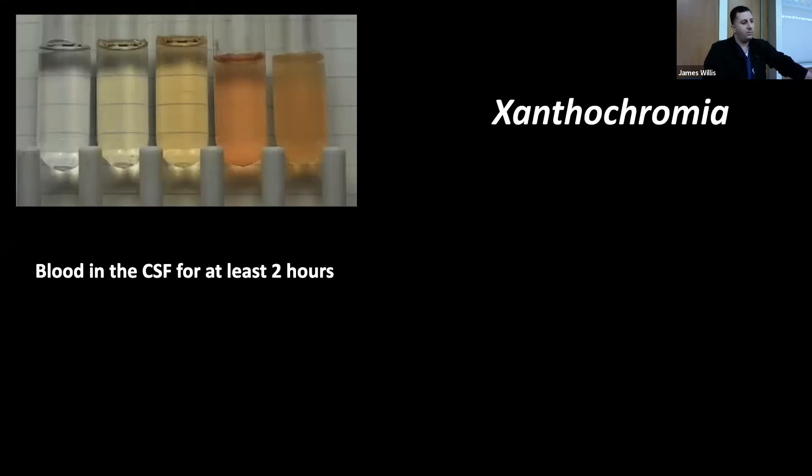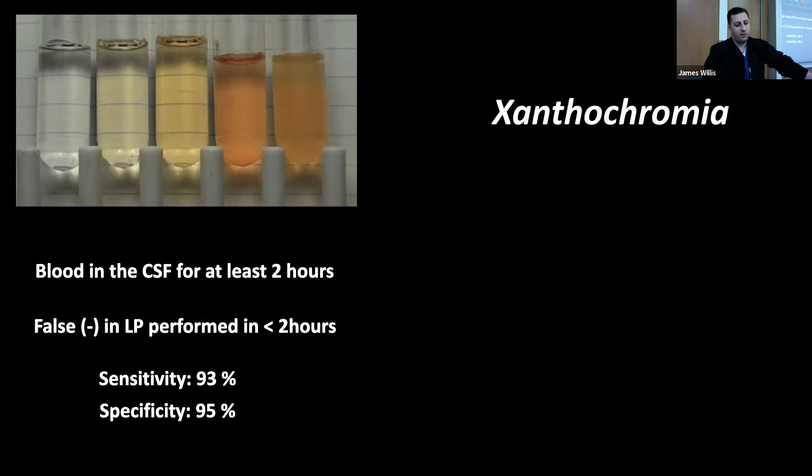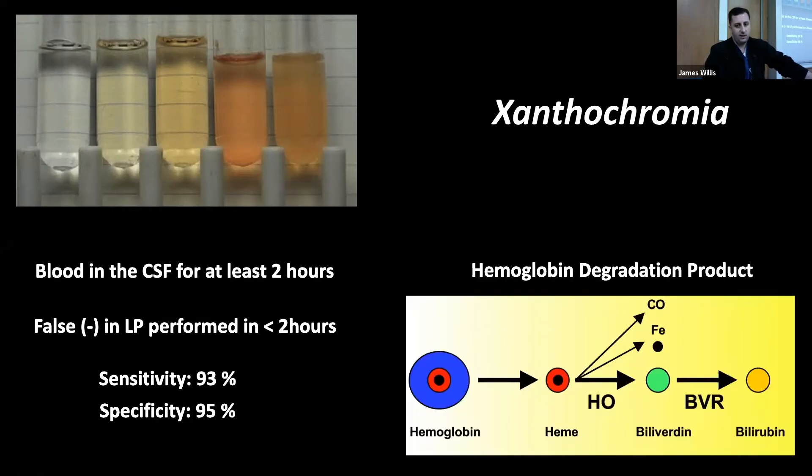Learning point number two, none of the patients who had a final RBC count in tube four of less than 100 had a subarachnoid hemorrhage. Going back to this diagram, although patient number three in the blue started off with a low RBC count, they did not have a 63% reduction. I'm not sure I'm very comfortable stating that that patient has a traumatic tap. I'm more comfortable stating patient four who started off with so many more RBCs had a traumatic tap based on a 63% reduction. Let's jump to the next section on xanthochromia. Xanthochromia, we know it's because of blood in the CSF, but just keep in mind that it does take two hours to develop.